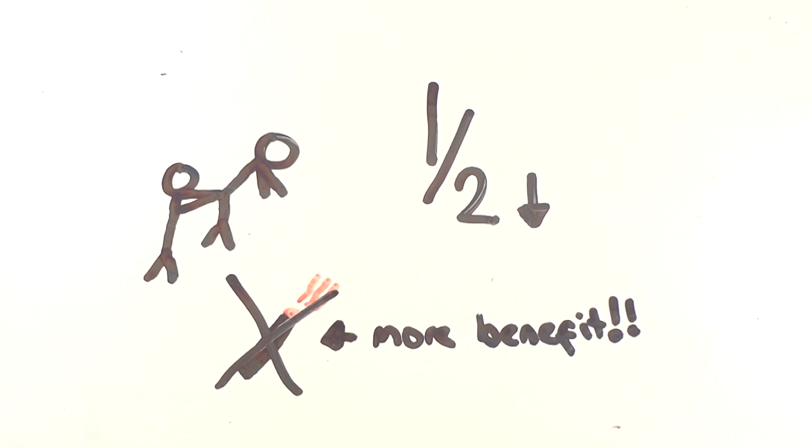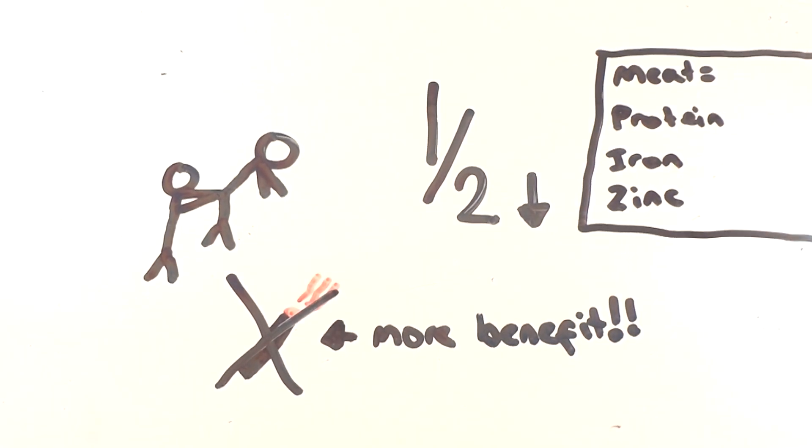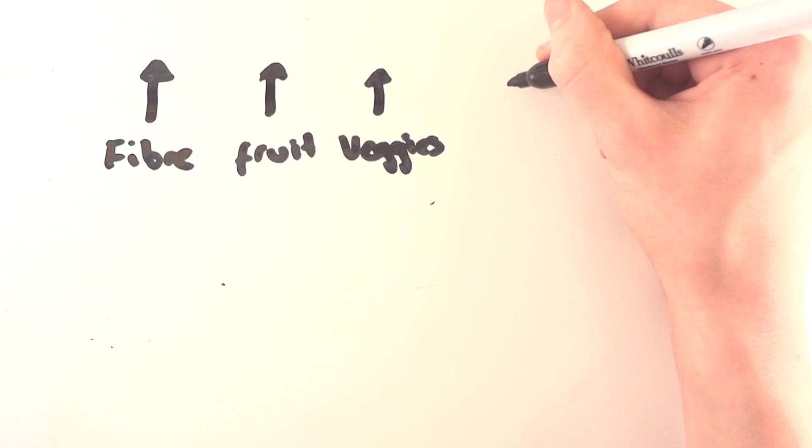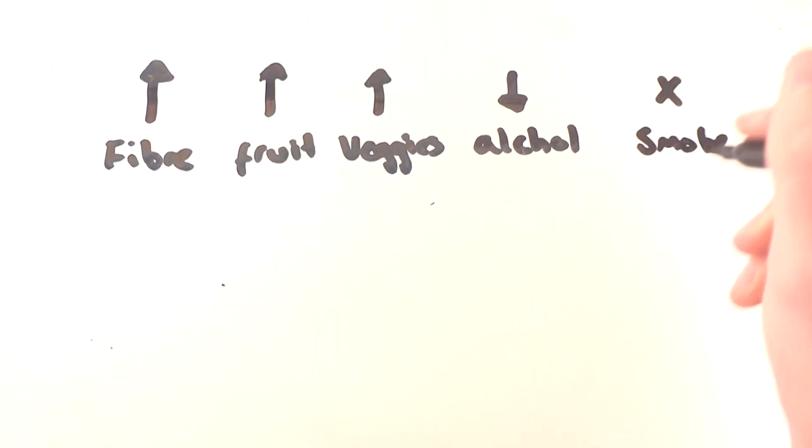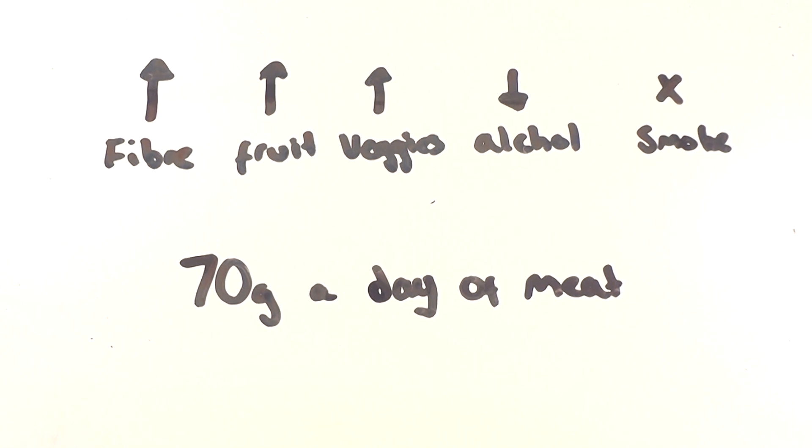Meat though is good in moderation as it is a good source of protein, iron, and zinc. In the end, Cancer Research UK says it all comes down to moderation. Eat plenty of fiber, fruit and veggies, cut back on your red and processed meat consumption, they suggest a limit of 70g a day, limit your alcohol intake or don't drink at all, and never smoke as that is always bad for you, and you should find your risk of cancer will decrease.